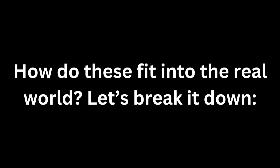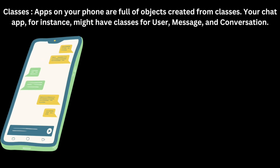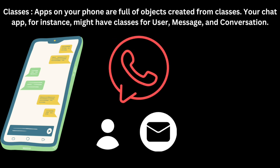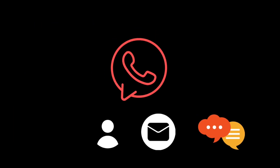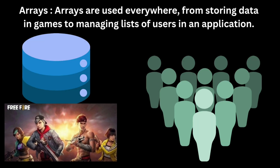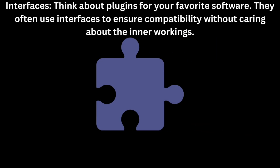How do these fit into the real world? Apps on your phone are full of objects created from classes — your chat app might have classes for User, Message, and Conversation. Arrays are used everywhere, from storing data in games to managing lists of users in an application. And interfaces are used by plugins for your favorite software to ensure compatibility without caring about the inner workings.